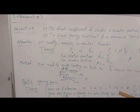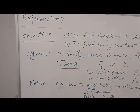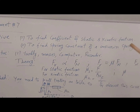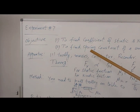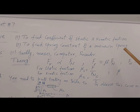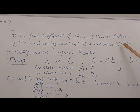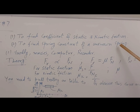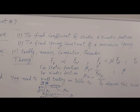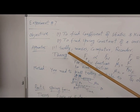This is experiment number seven. The objective is to find the coefficient of static and kinetic friction. We also have a second part: to find the spring constant of an unknown spring. We will give you three springs with different qualities, so their spring constants will be different. Let us first go to experiment number one, to find the coefficient of static friction.